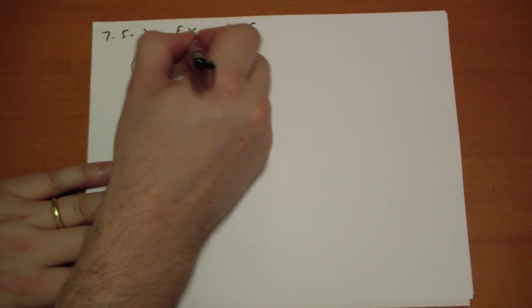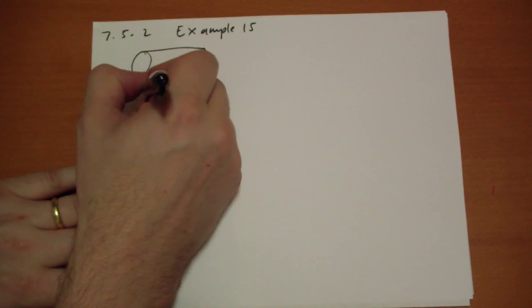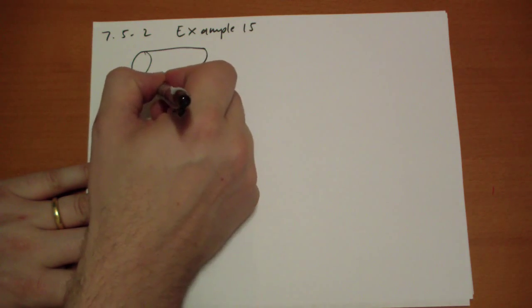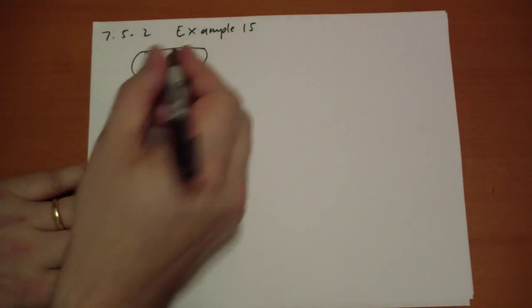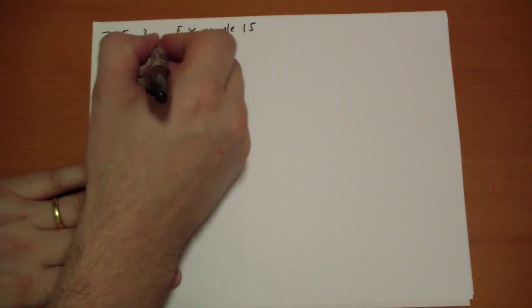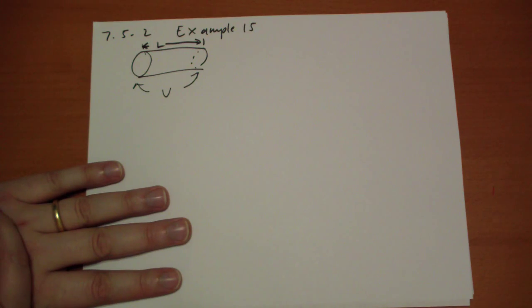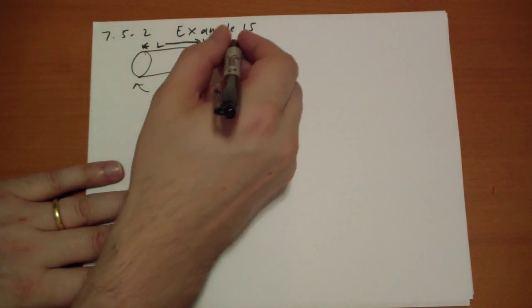So we have our cylinder like this, we have the difference between these is V, there's a potential difference across those surfaces. We have a length L, we have a current I that's flowing.